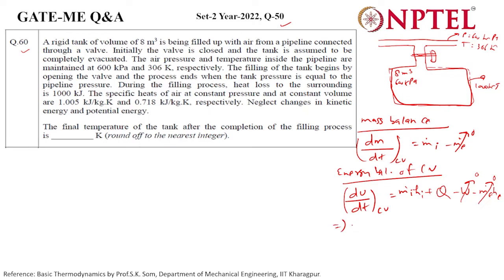Integrating over the whole time frame: the change in internal energy of the control volume is U2 minus U1, but U1 is zero since the tank was initially evacuated. This equals the total mass that entered times the inlet enthalpy h_i, which is c_p times the inlet temperature T_i. Since heat is going out of the system, Q is minus 1000.